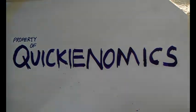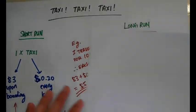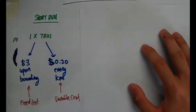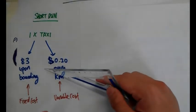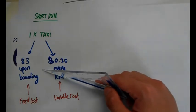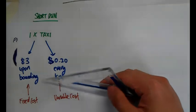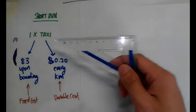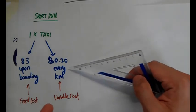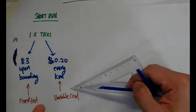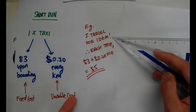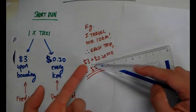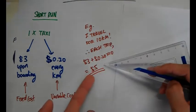Let's use a taxi fare example. In the short run, let's take one taxi. When you board the cab, the starting fare is already $3 — you have not travelled a single kilometre yet and you have to pay $3. That is the fixed cost: no matter how many kilometres you travel, you pay $3. The variable cost would be $0.20 every kilometre, so the more you travel, the more you pay. If you travel 10 kilometres, your total cost is $3 fixed cost plus $0.20 multiplied by 10 kilometres, giving a total of $5.